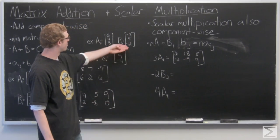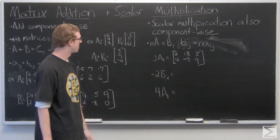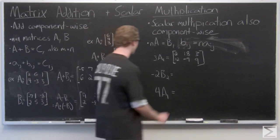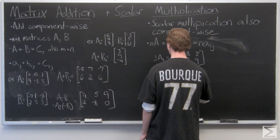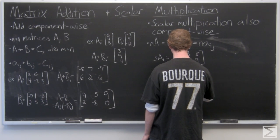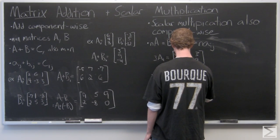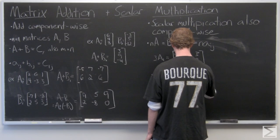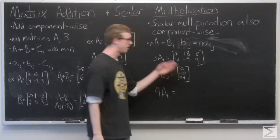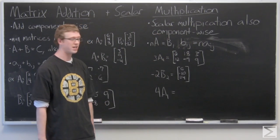Negative 2 times B2. It's again going to be a 3 by 1 matrix. And the result is 6, negative 10, 24.